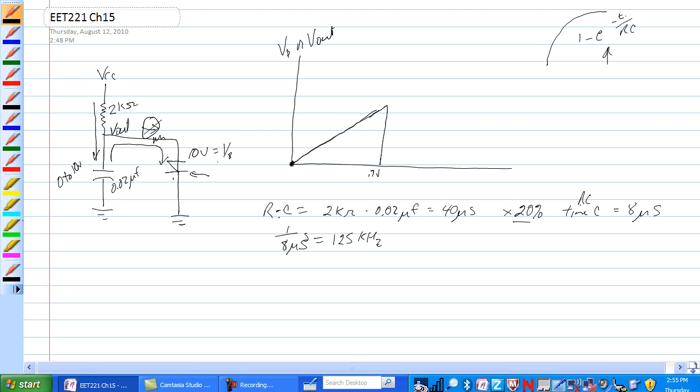When it gets down below the holding current, it turns off, and the cap begins to charge again, just like that. It charges to 10 volts, and the diode breaks over, and it drops to 0.7 volts, however long a period of time it takes for this to charge, for the cap to discharge through this device.